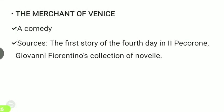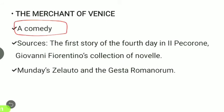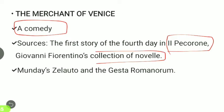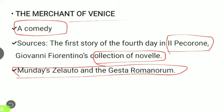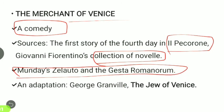The next work is The Merchant of Venice, a comedy by Shakespeare. Its sources include the first story of the fourth day of Giovanni Fiorentino's collection of novellas Il Pecorone, as well as Mondus Gelatus and Gesta Romanorum. It was also adapted by George Granville as The Jew of Venice.